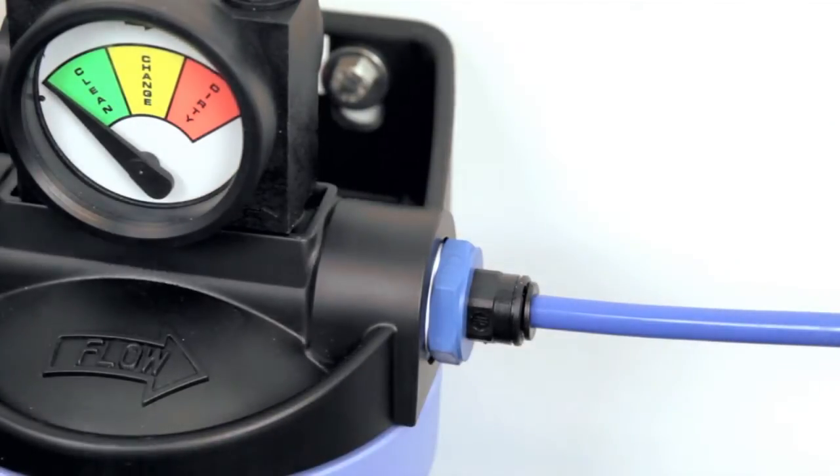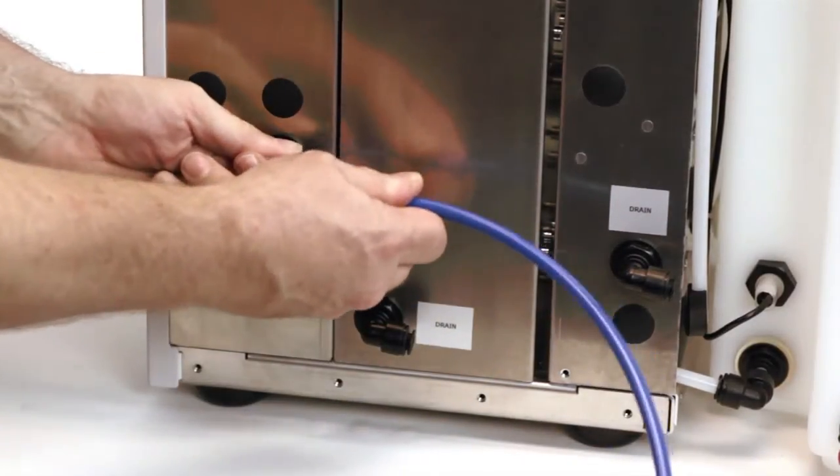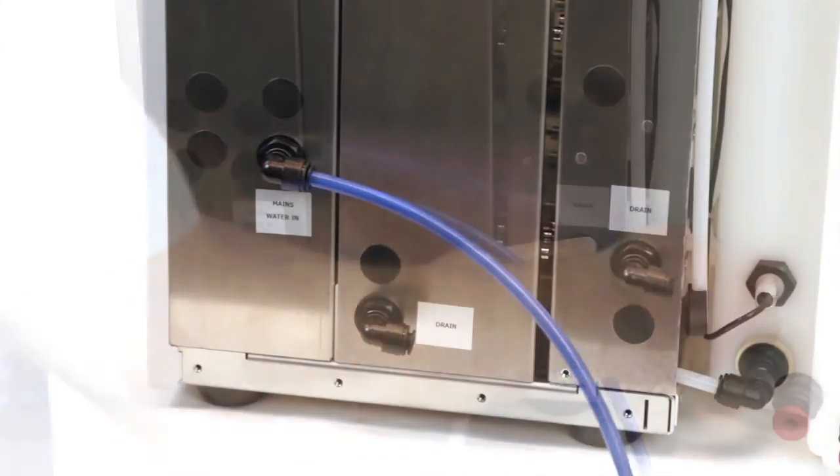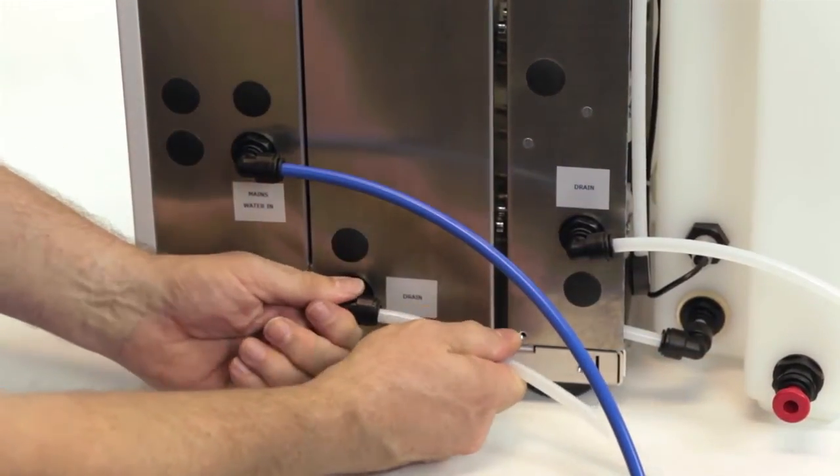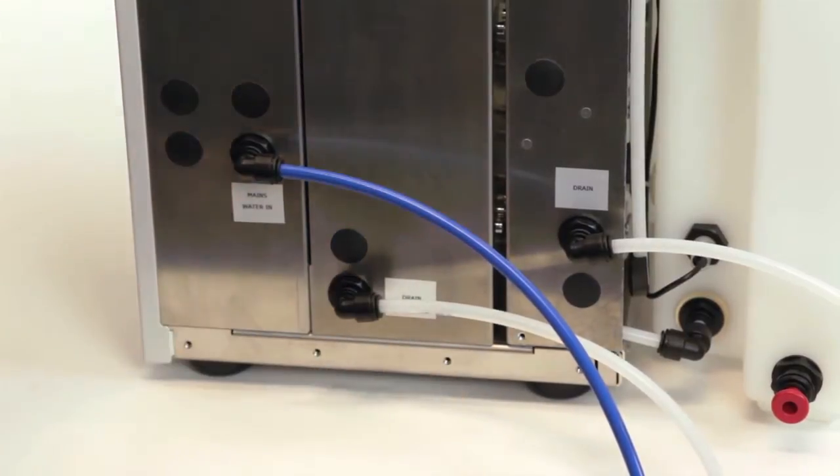Using the 8mm tube cut to length, connect the outlet of the carbon filter to the inlet of the Fusion. Use the clear 8mm tube to connect the two drain points to your waste outlet.